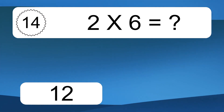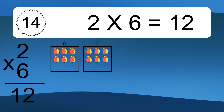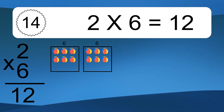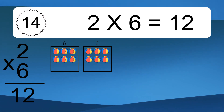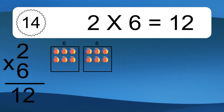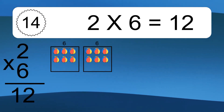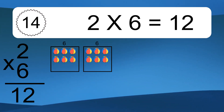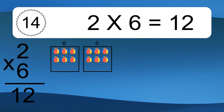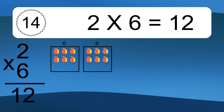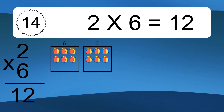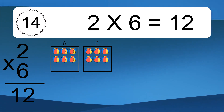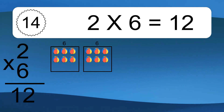2 times 6 equals what? 2 times 6 equals 12. We have 2 boxes and each box has 6 colorful balls inside. If you count all the balls in all the boxes together, you will have 2 times 6 balls. This equals 12 balls.